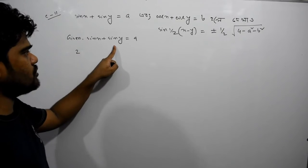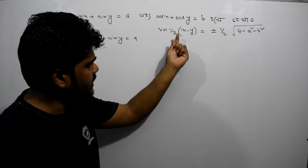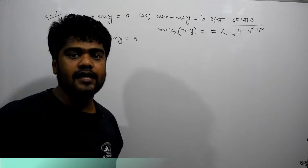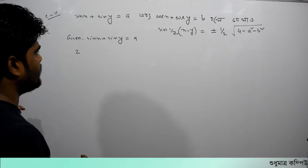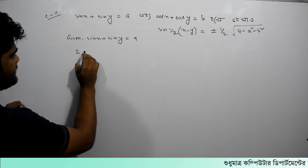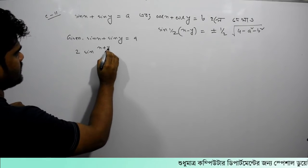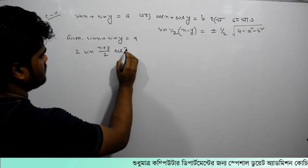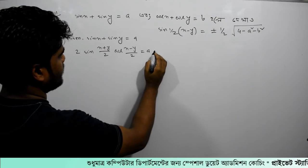I will use this. If a equals x minus y, we will have 2x minus y. Using the sum-to-product identity: 2 sin((c plus d) divided by 2) times cos((c minus d) divided by 2) equals a.